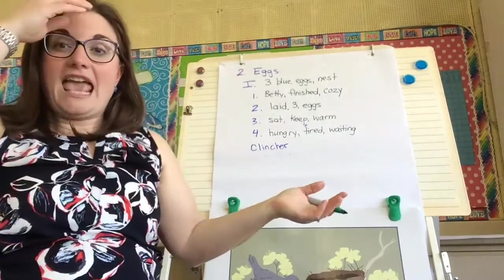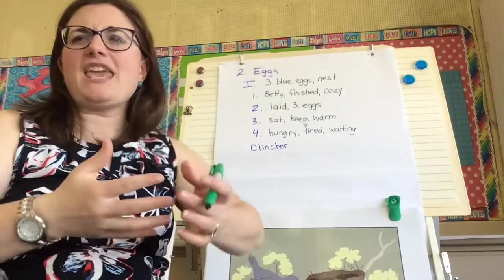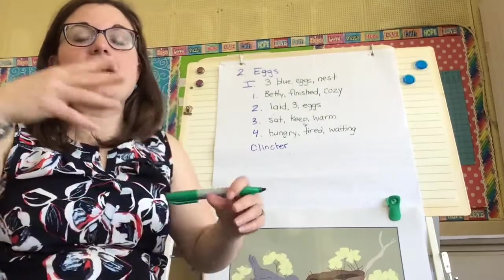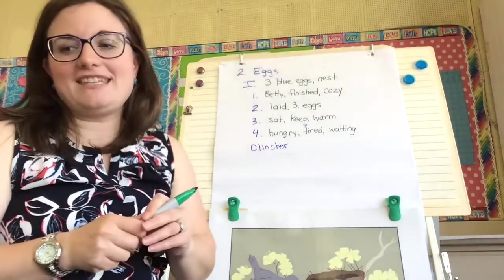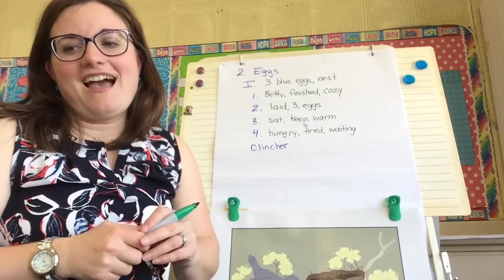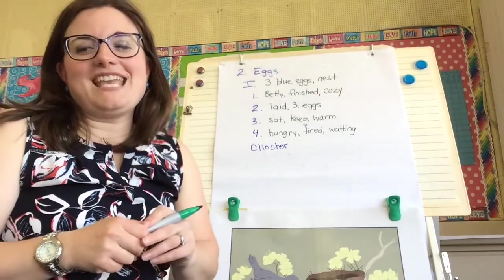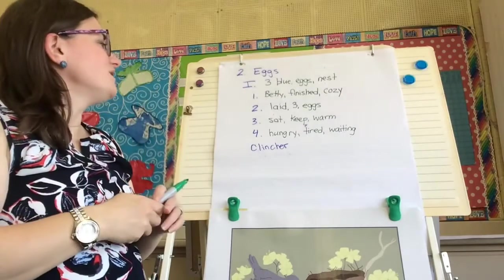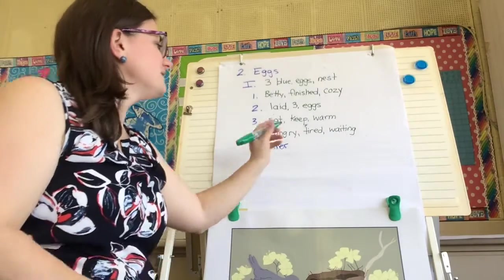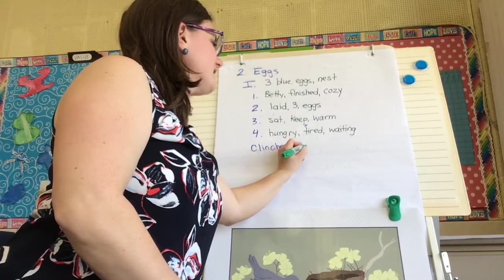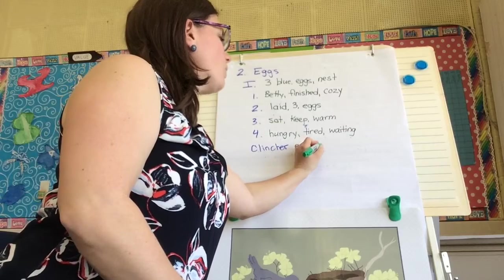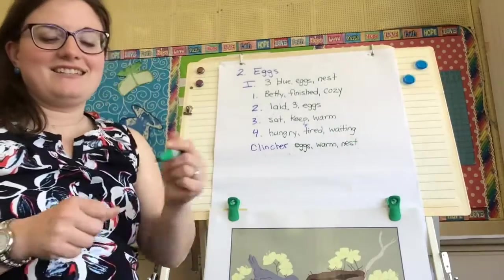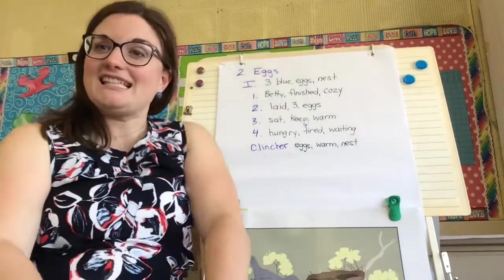Remember, you can add the details of how the eggs got there and what happens with the eggs — maybe something that happened right before or right after the eggs get in the nest. You can add the details of why it's happening, who and what is taking place. My clincher is going to be: the eggs are staying warm in the nest.